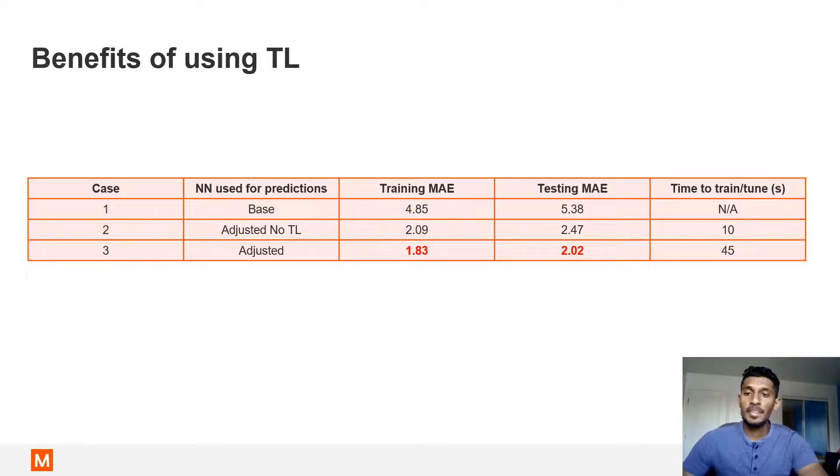Case one resulted in high training and testing mean absolute errors. This makes sense as the base neural network was trained on data points from the base model, but is being used to predict stresses from the adjusted model. Case two only took 10 seconds to train due to the low number of data points used. This also resulted in better training and testing mean absolute errors.